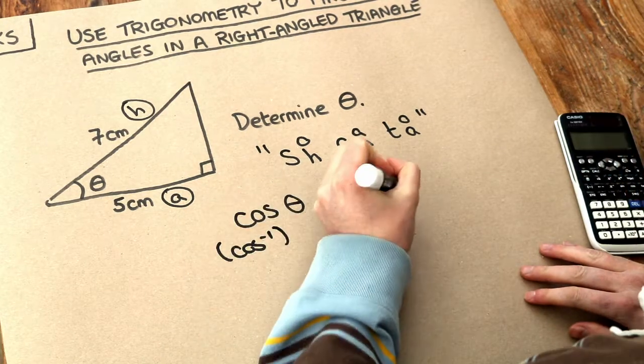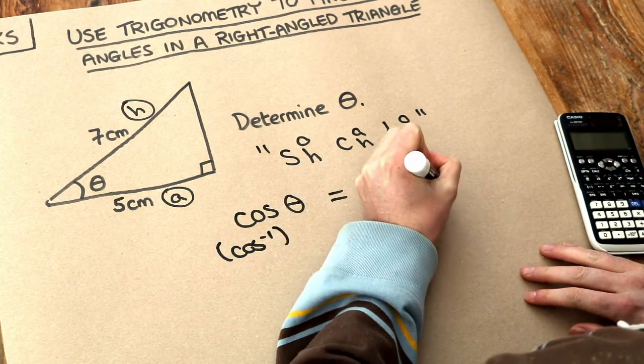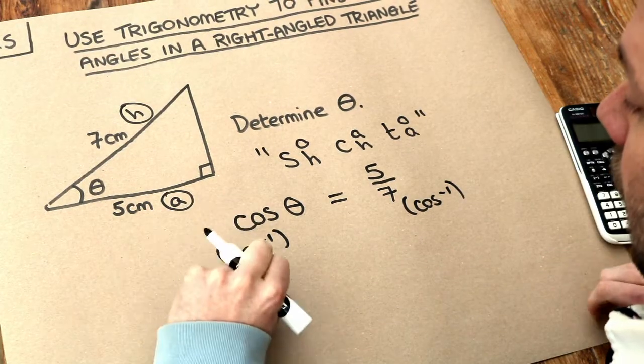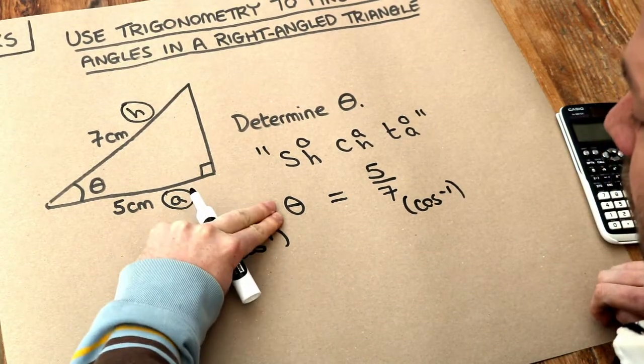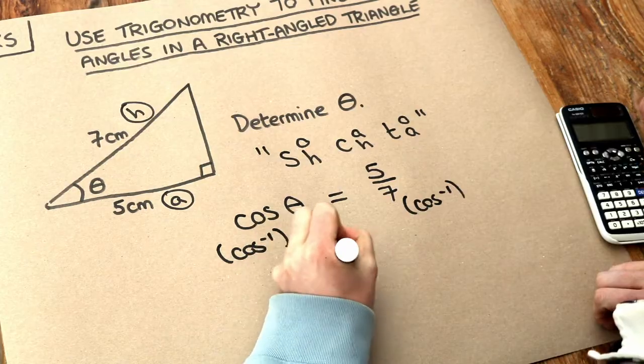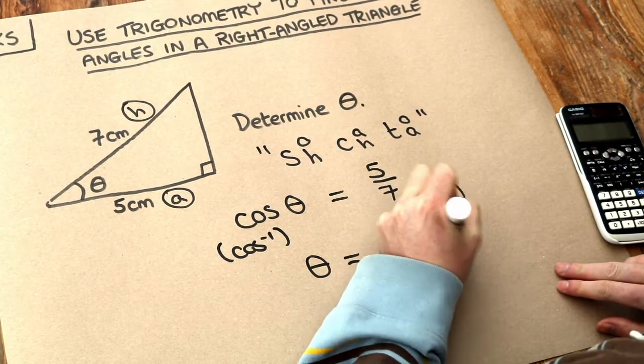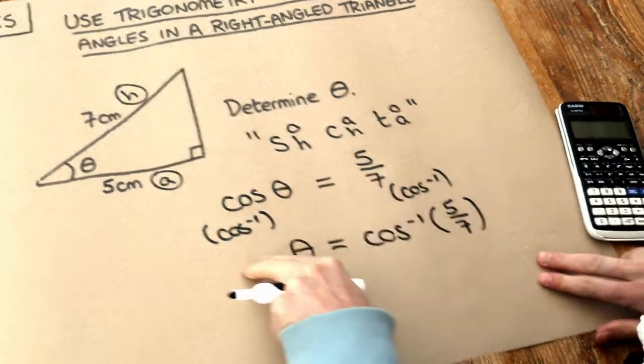Cos minus one is how it's written. Don't worry about why we use the minus one in that notation. What it does is it gets rid of this cos. If we do inverse cos of cos it cancels out leaving just theta. And if we do inverse cos of this we write inverse cos of 5 over 7.